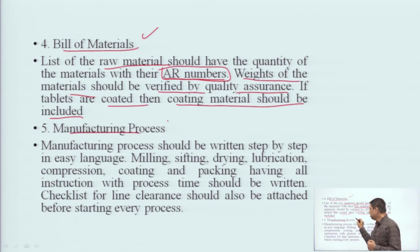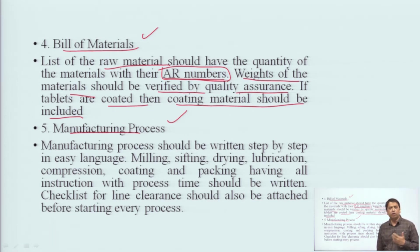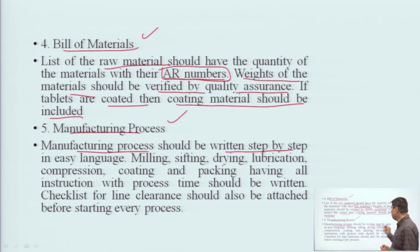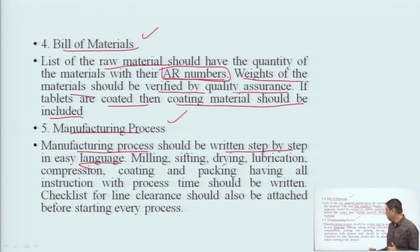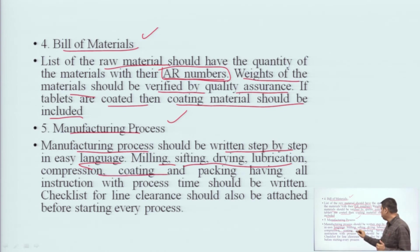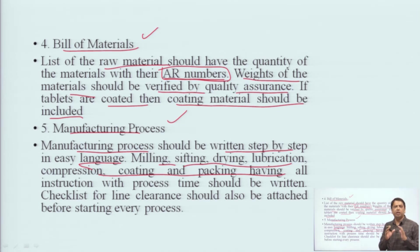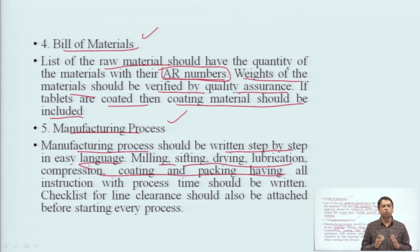The fifth part is the Manufacturing Process. What manufacturing process was used — because the manufacturing process depends on the product type. The manufacturing process should be written step by step in easy language. Milling, sifting and drying, lubrication, compression, coating, packaging — all these manufacturing processes have a proper checklist attached, showing how all these processes were performed and actually carried out.